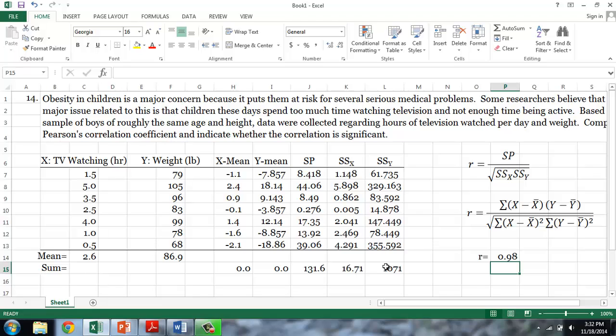R varies between negative 1 and positive 1. The sign tells us whether we have a positive association or a negative association. And the magnitude tells us the strength of that correlation. In this case, we have a very strong positive correlation, meaning that the more hours an individual spends watching television, the higher their weight. And the fewer hours spent watching TV, the lower one's weight.